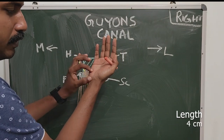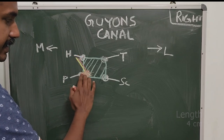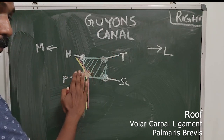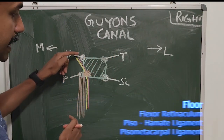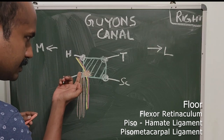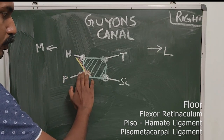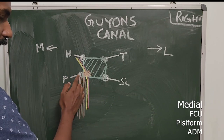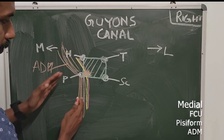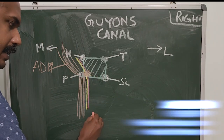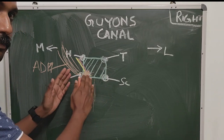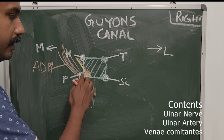Guyon's canal is approximately four centimeters in length. Its roof is formed by the volar carpal ligament along with the palmaris brevis muscle. The floor is formed by the pisohamate ligament, which is a continuation of the FCU tendon. On the medial aspect the boundary is formed by the FCU, pisiform, and abductor digiti minimi muscle. On the lateral aspect, the other digital flexors and the flexor retinaculum form the boundary. The contents are the ulnar nerve and ulnar artery.